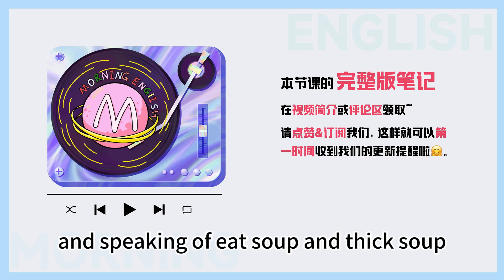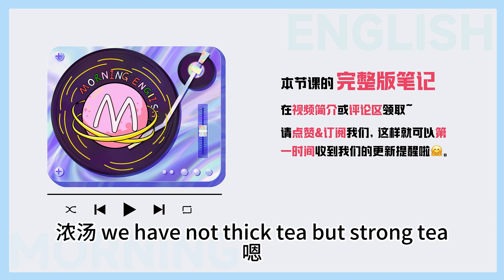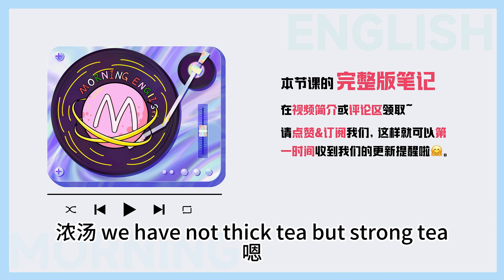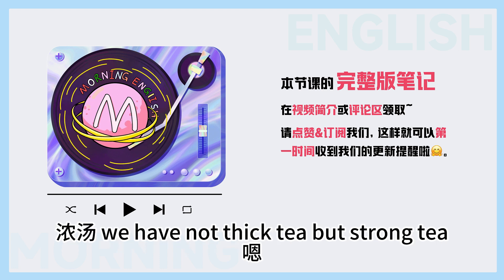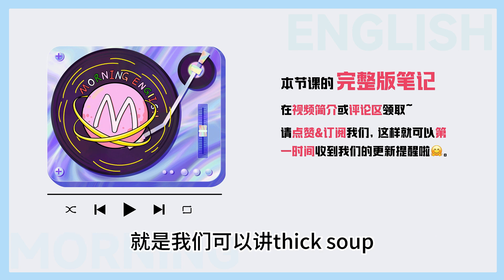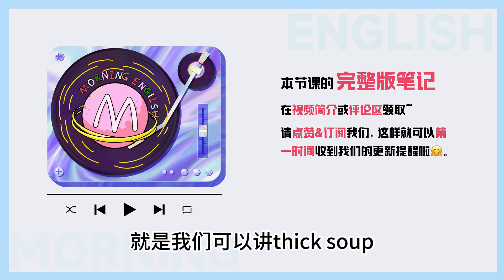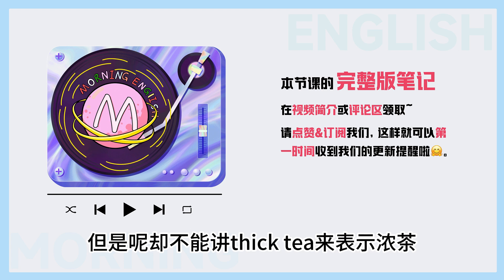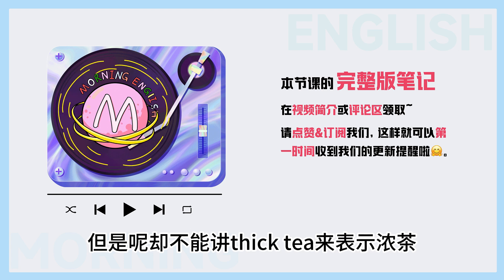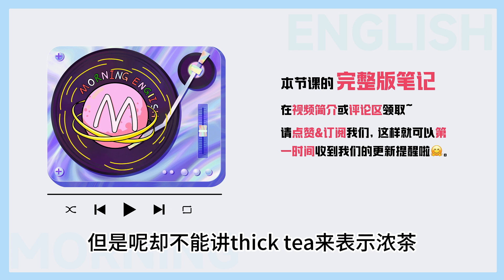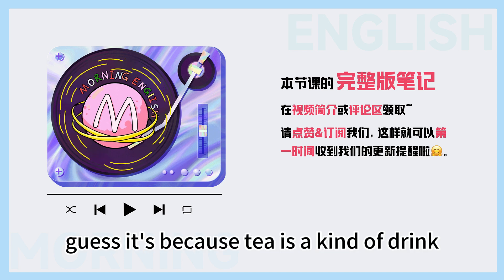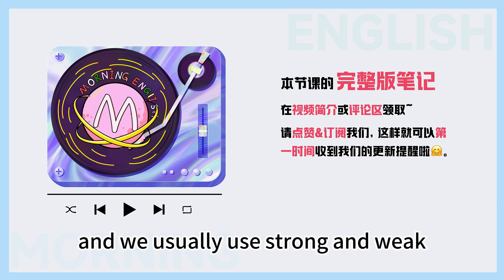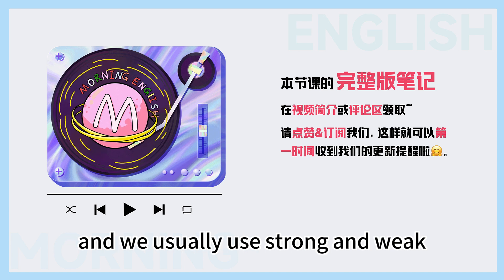在中文当中，不管是浓汤还是清汤，甚至是粥，我们都会用「喝」，翻译成英文就是drink。但在英文中，你用drink还是eat，依据这个汤的浓度来定。比较浓的汤用eat，比较清淡的汤用drink。另外，我们可以讲thick soup（浓汤），但却不能讲thick tea来表示浓茶，而是用strong tea。